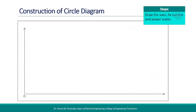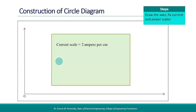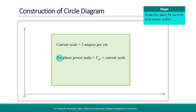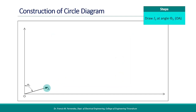The first step in constructing the circle diagram is to draw the horizontal and vertical axes and fix the current and power scales. For example, we may take 2A per centimeter for current, which may vary depending on the current rating of the machine. The power scale is related to the current scale: per-phase power scale equals phase voltage multiplied by the selected current scale. If the rated phase voltage is 240 volts, then the power scale is 240 × 2 = 480 watts per centimeter. Start by marking the no-load phase current I0, counting the current scale at an angle phi0 from the vertical axis, which represents voltage.